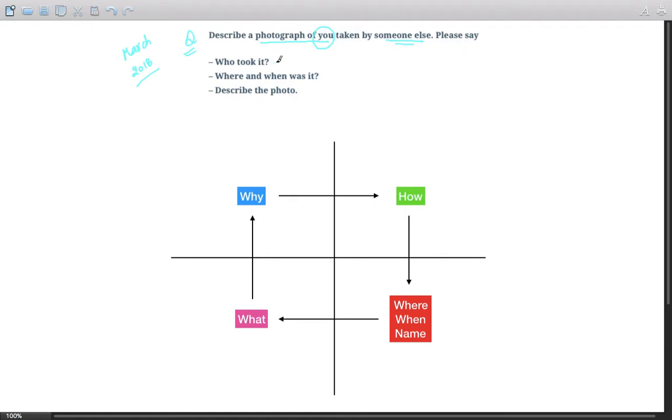Please say who took it, where and when was it, and describe the photograph. Now as usual we'll be doing this brainstorming part using the four quadrants - quadrant one, quadrant two, quadrant three, and quadrant four. Remember, you have just one minute during the exam to spend on the brainstorming part and you have to deliver it in two minutes.